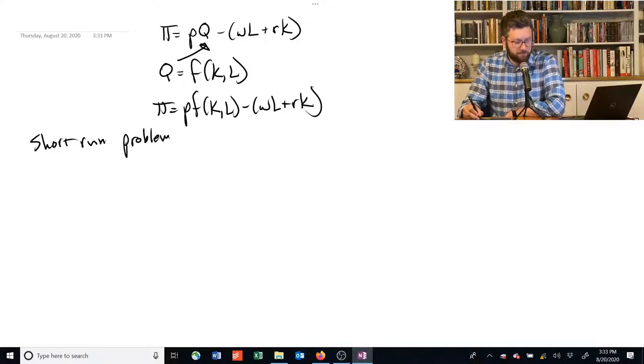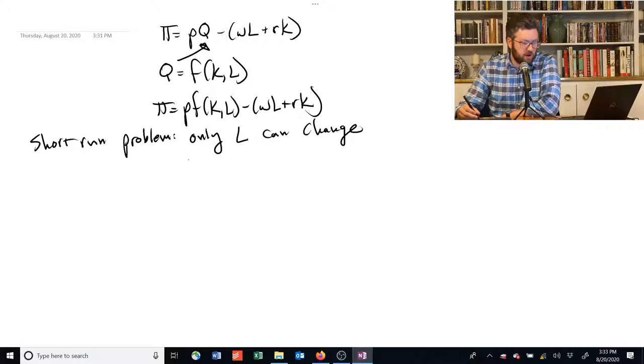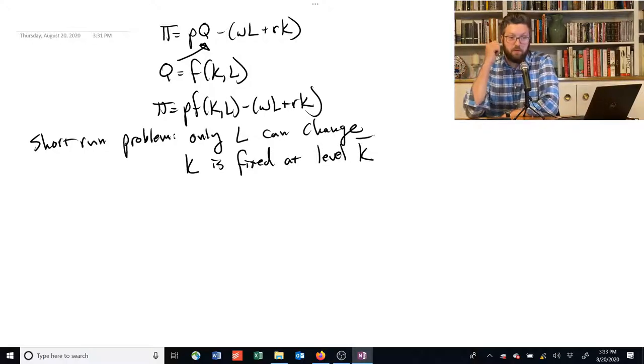In the short run, we're going to say that only L can change. This is a situation where capital K is fixed at some level, which we'll call K with a bar over it.